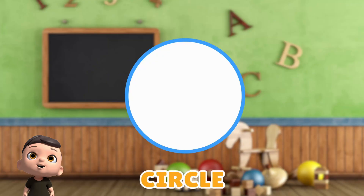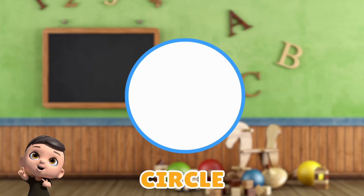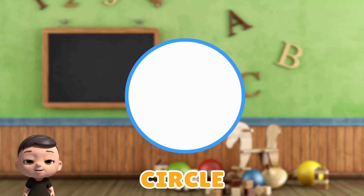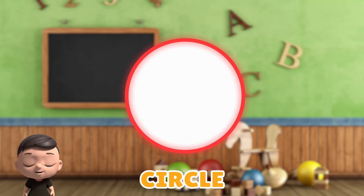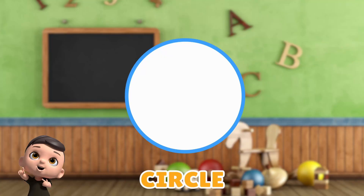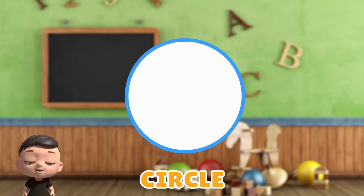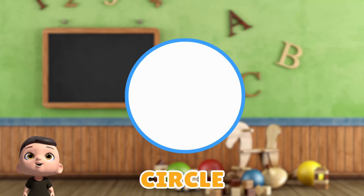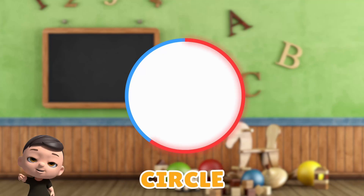This is a circle! Let's see how many sides a circle has. Circle has no straight sides at all. Now let's count the vertices of a circle. There are none. Circle has 0 vertices. So we can say that a circle has no sides and no vertices. A circle is a round shape with no corners and no straight edges.